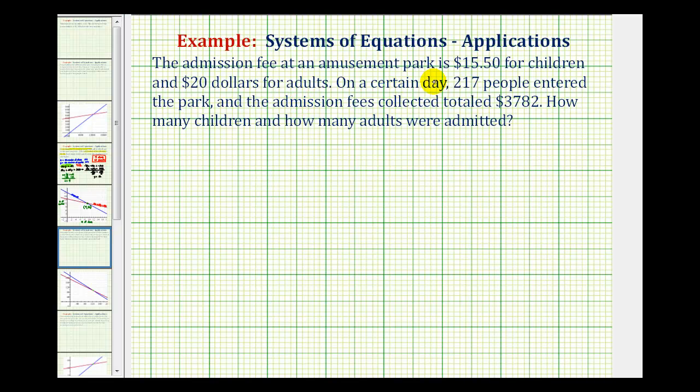The admission fee at an amusement park is $15.50 for children and $20 for adults. On a certain day, 217 people entered the park and the admission fees collected totaled $3,782. How many children and how many adults were admitted?